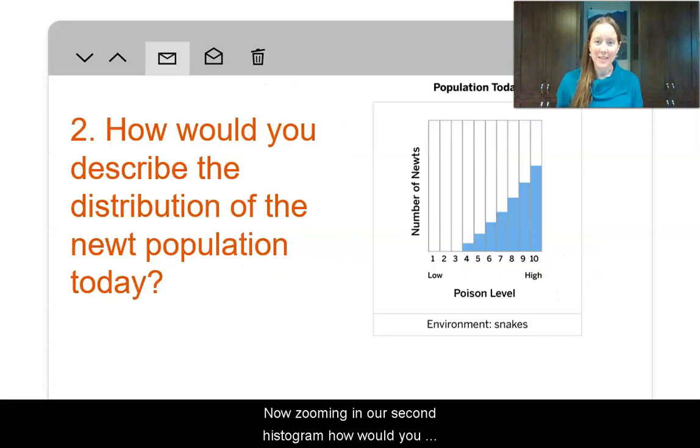Now zooming in on our second histogram, how would you describe the distribution of the newt population today?